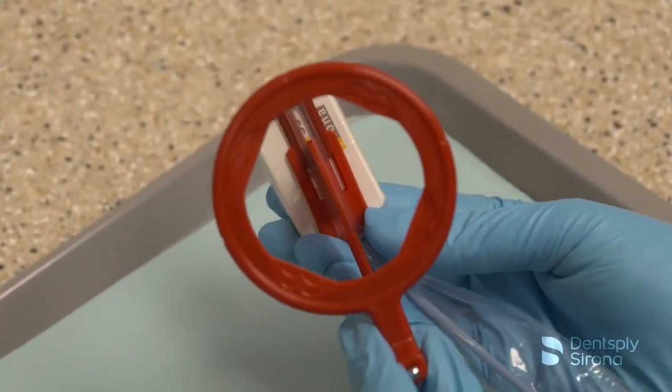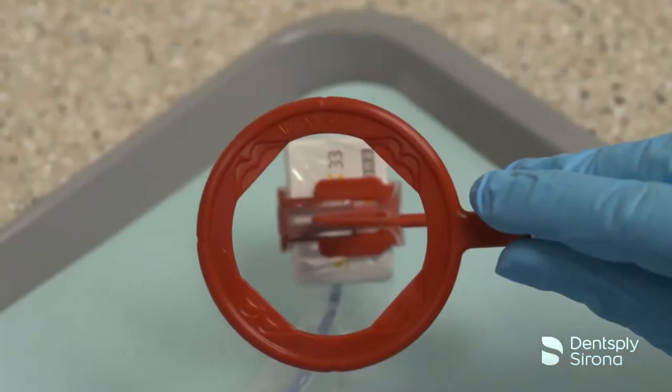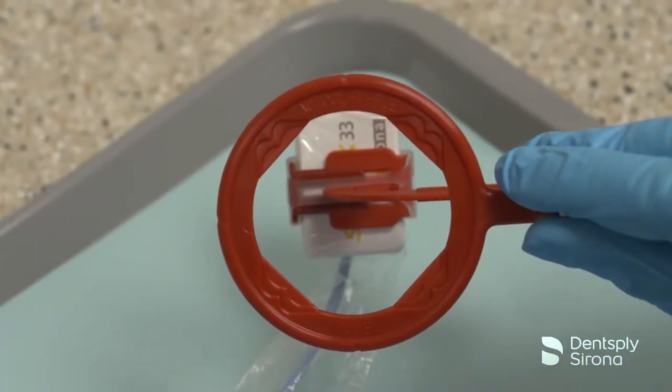If taking horizontal images, the sensor will be placed into the bite block in the horizontal position and in a vertical position if capturing vertical bitewings.